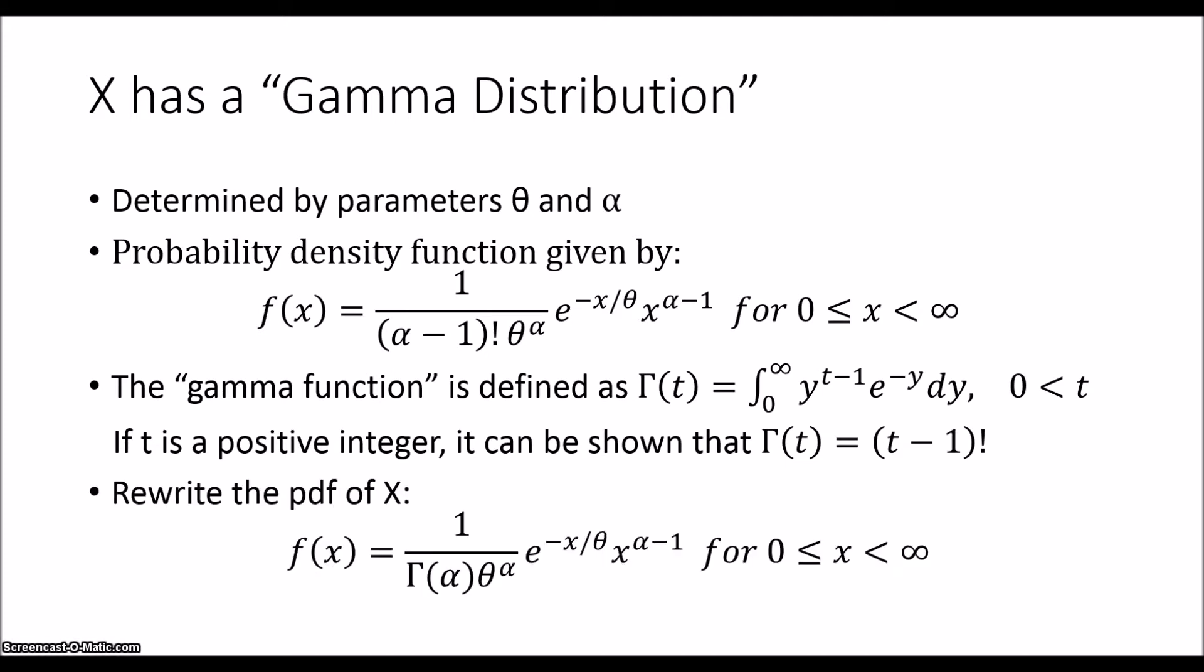And so we rewrite the pdf of X as f(x) equal to 1 over Γ(α) times θ^α multiplied by e^(-x/θ) times x^(α-1) for values of x that are greater than or equal to 0. And so this is how we usually see the gamma distribution written with the gamma function, how we get our name of the distribution.